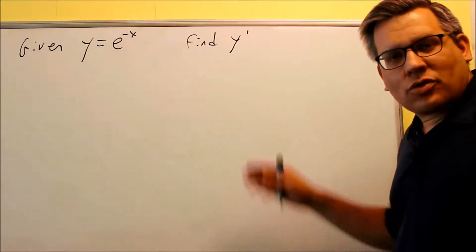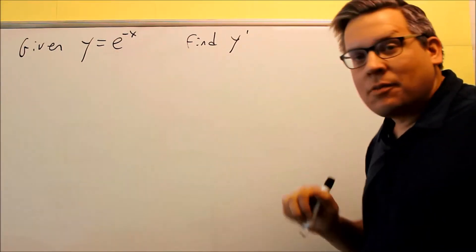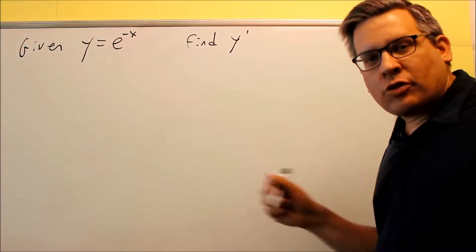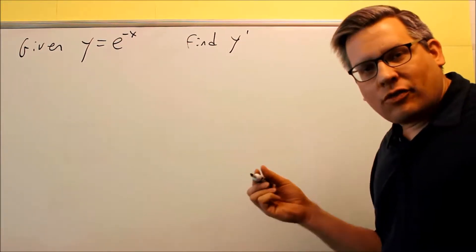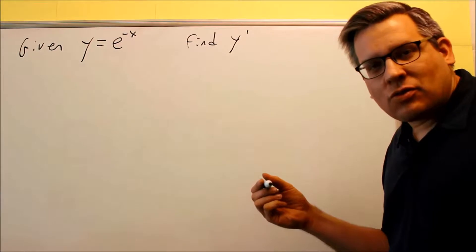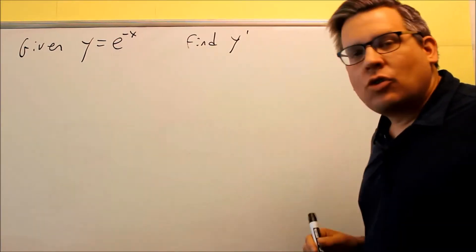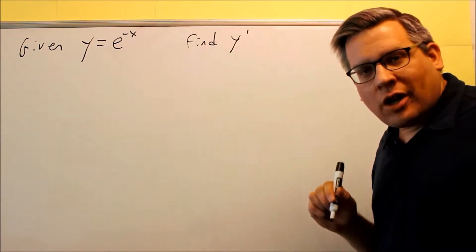Okay, so we're going to take a look at some examples involving e. We talked about before that the derivative of e to the x is itself, so we get e to the x as its derivative. But this time, we have e to negative x. So let's take a look at that one.